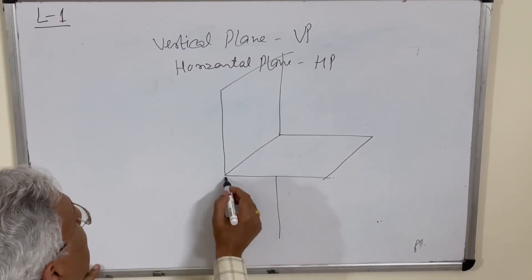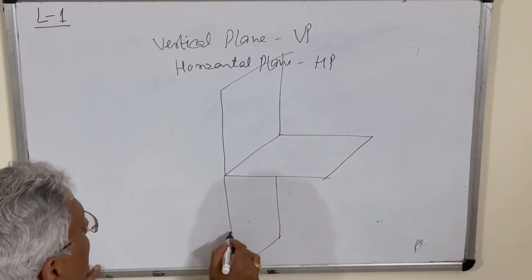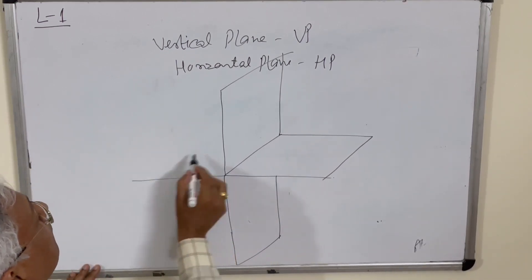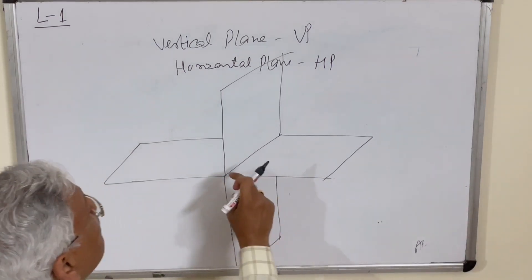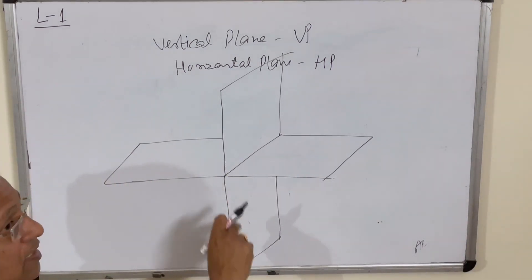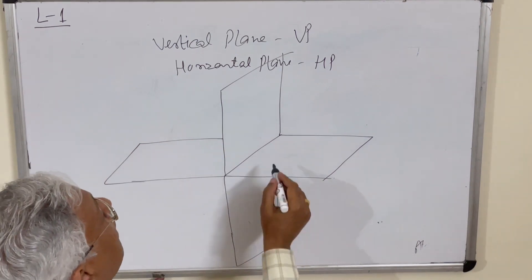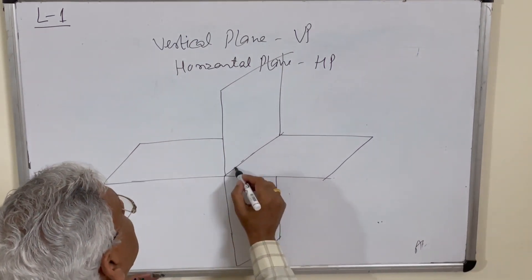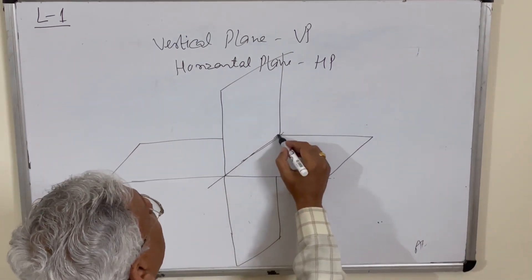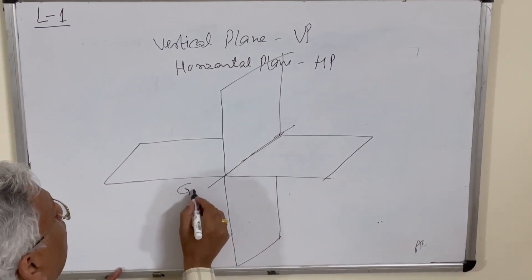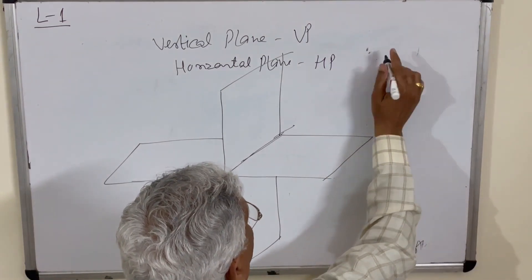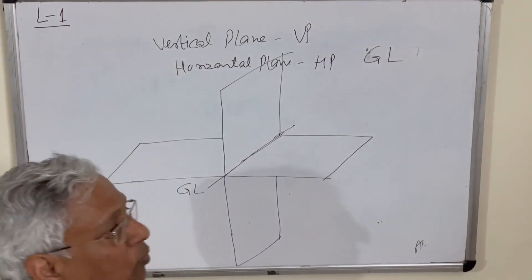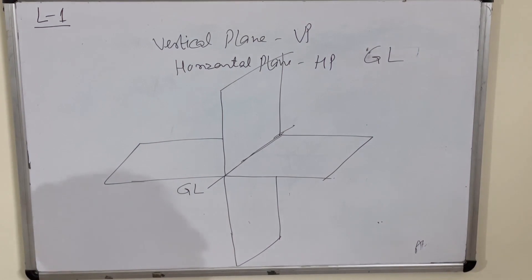These are the vertical plane and horizontal plane. They extend to infinity in both vertical and horizontal directions. The intersecting line of the two planes is called the ground line, GL. The ground line is the intersection of the two planes.